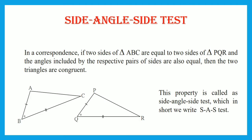There are different tests of congruency of two triangles. One is the Side-Angle-Side test. In a correspondence, if two sides of triangle ABC are equal to two sides of triangle PQR, and the angles included by the respective pairs of sides are also equal, then the two triangles are congruent. This property is called the Side-Angle-Side test, which in short we write as the SAS test.